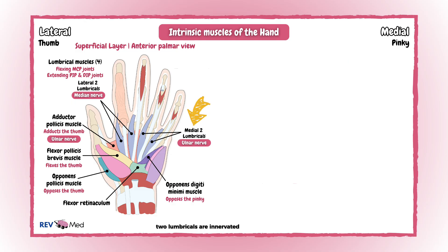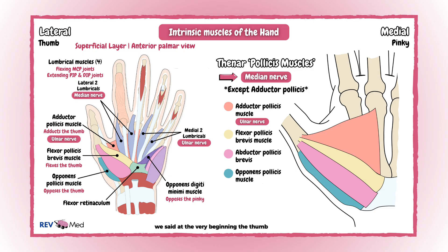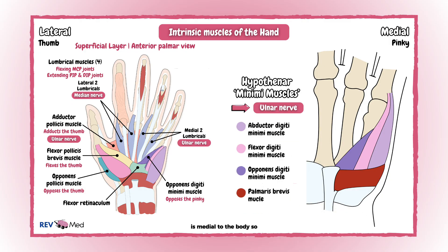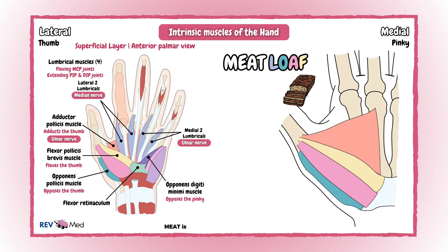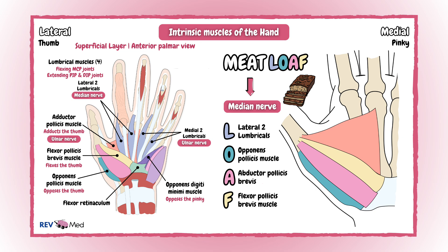Remember: the medial two lumbricals are innervated by the ulnar nerve, and the lateral two lumbricals by the median nerve. All the thenar muscles are innervated by the median nerve — since the thumb is lateral, the median nerve runs laterally, so the lateral two lumbricals must be median nerve. The hypothenar pinky is medial, so the medial two lumbricals are innervated by the ulnar nerve, same as the hypothenar muscles. Another mnemonic is MEATLOAF: Meat reminds you of the median nerve, and LOAF refers to the muscles it innervates — the Lateral two lumbricals, Opponens pollicis, Abductor pollicis brevis, and Flexor pollicis brevis. The thumb plus two lumbricals are 'meaty,' meaning they are innervated by the median nerve.